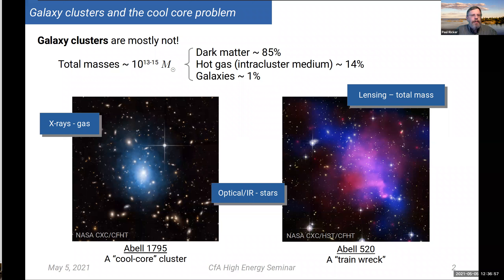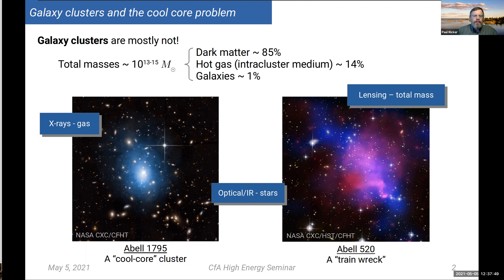Just to get everyone on the same page: this is about galaxy clusters, which is unfortunately a bad name for these objects. They are mostly not galaxies — they're mostly dark matter and hot gas. That hot gas, the intracluster medium, is at temperatures of 10^7 to 10^8 degrees, causing it to emit X-rays. Clusters come in a few different morphological varieties. We have train wrecks where clusters are merging with objects of similar mass, but the particular kinds we'll be focusing on are the more relaxed ones known as cool core clusters, like Abell 1795.